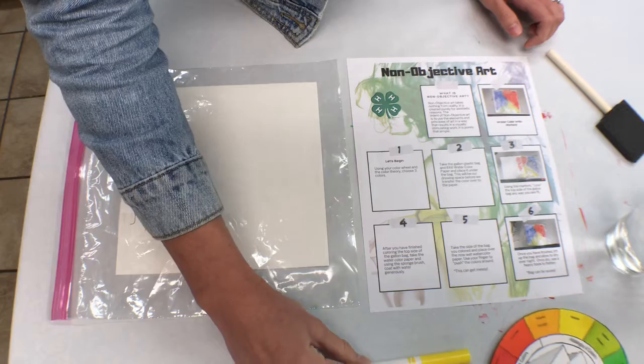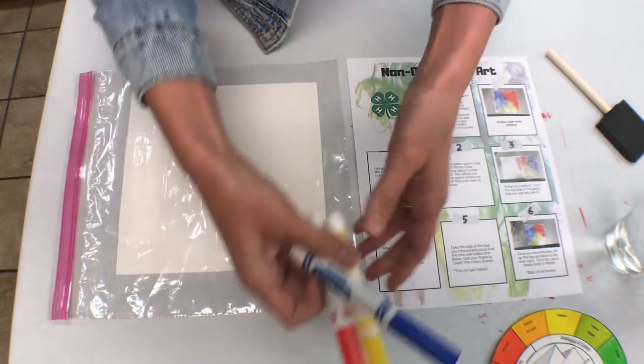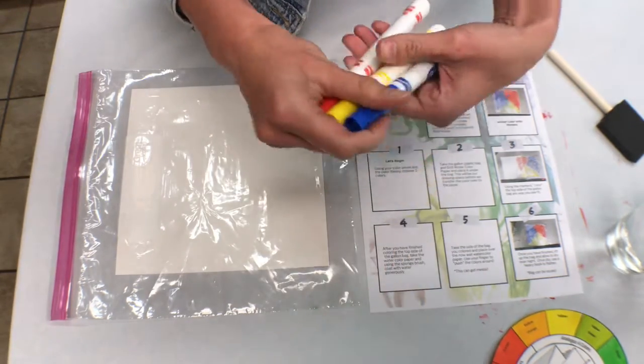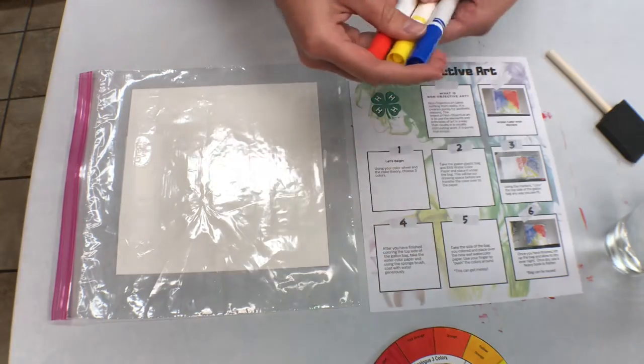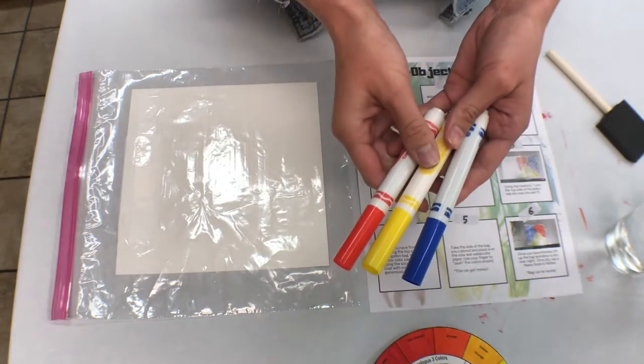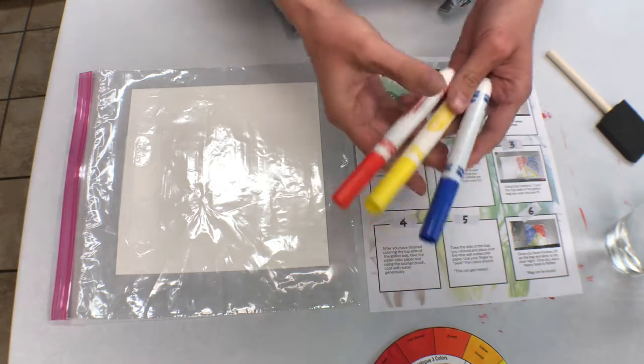Then you're going to take three markers of your choice. I chose the primary colors. You can base this off of your color wheel activity. I chose red, blue, and yellow.